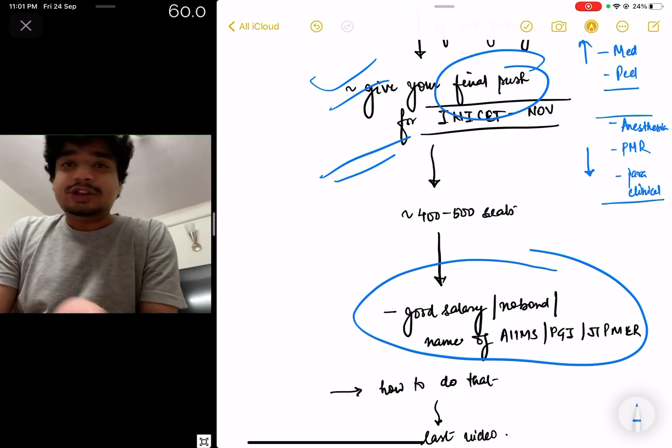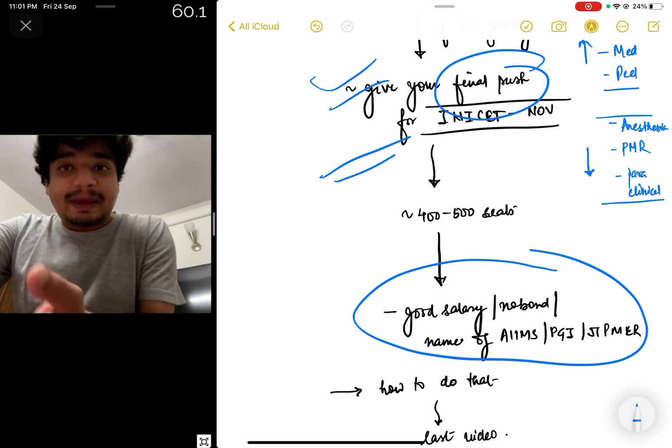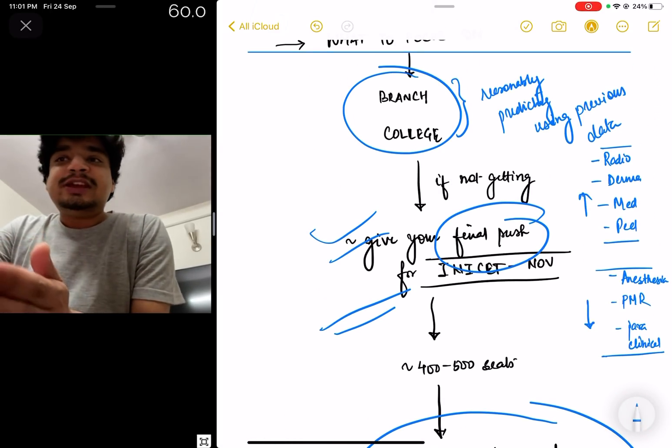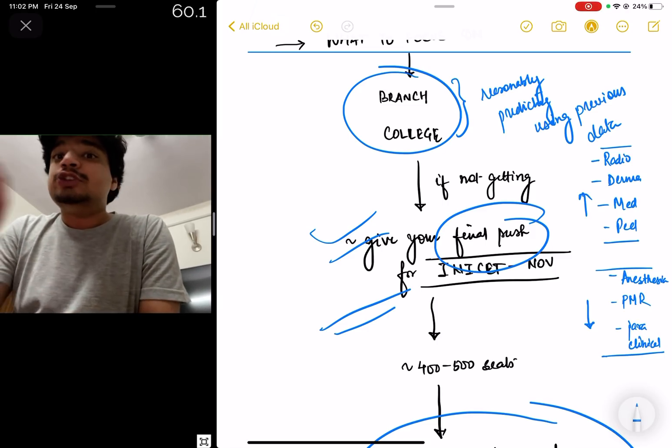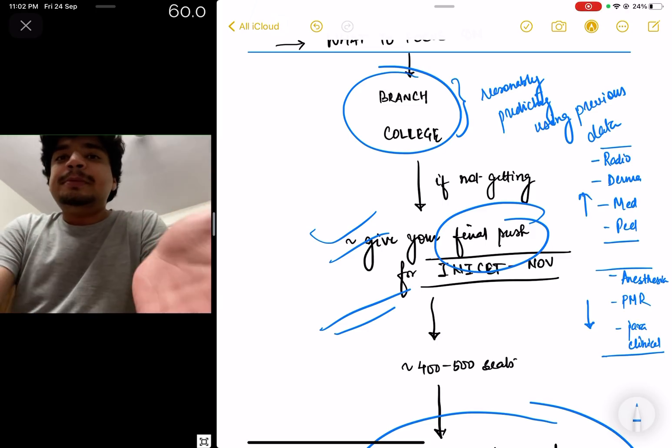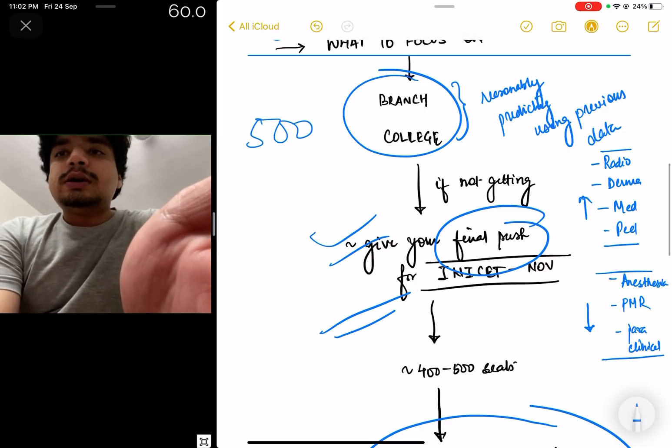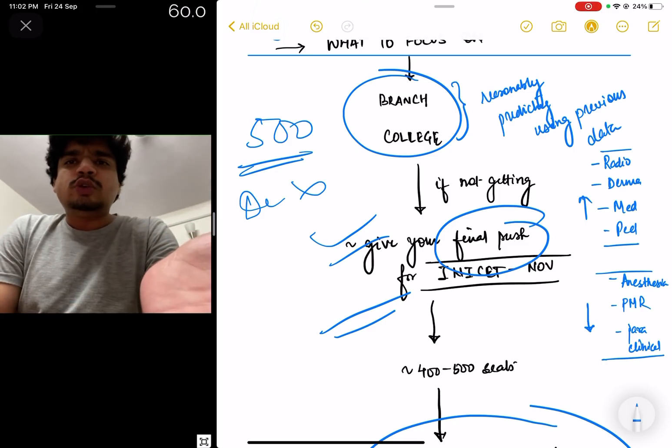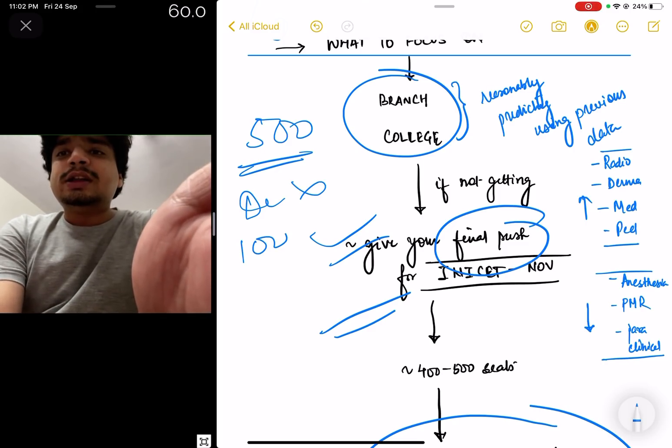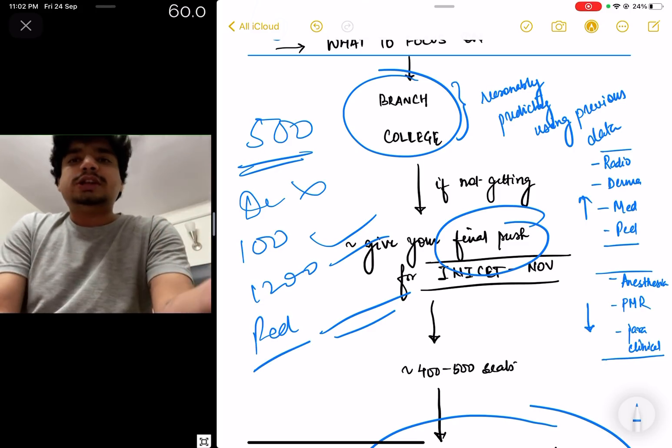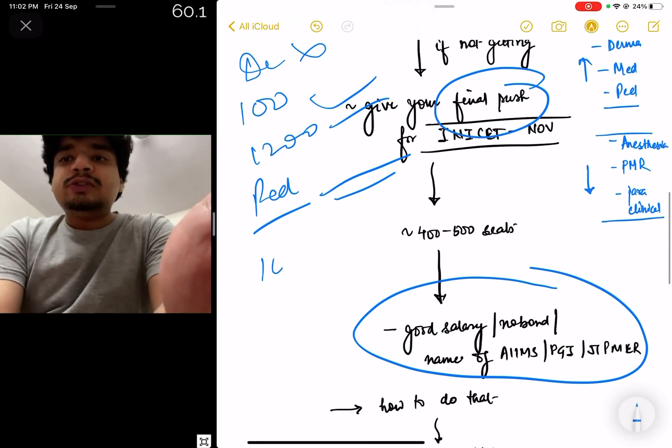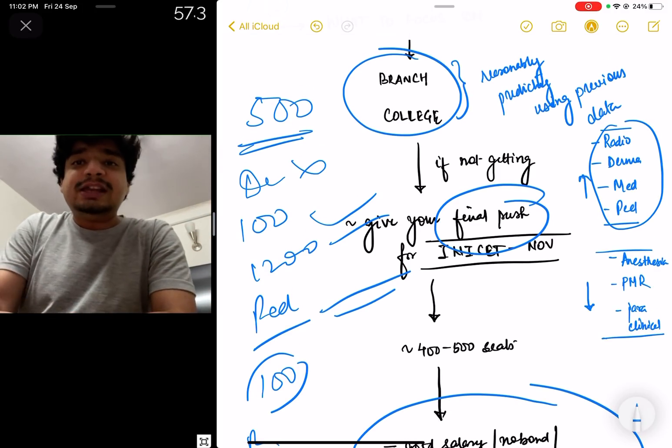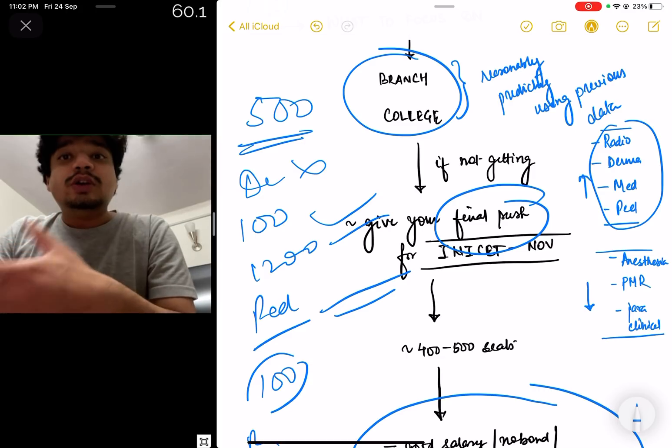So even if your rank is not up to the mark in NEET PG, this final push can propel you to get a good clinical seat in AIIMS or AIIMS-like institutes in Rishikesh, Jodhpur, Delhi, NIMHANS. The good part, like I told in the previous video, the salary is good, there are no bonds, you have the name of these institutes. Now the reason I'm saying focus on branch and college is you can reasonably predict. We can reasonably predict usually 500 ke under tak Delhi mein Medicine band ho jati hai, we all know this is a very known fact. We also know ki 1200 ke under Peds Delhi mein band ho jati hai, Radio Delhi mein 600 ke khatam ho jati hai.